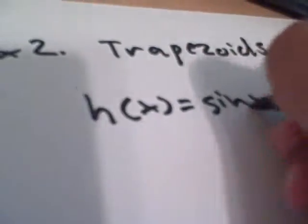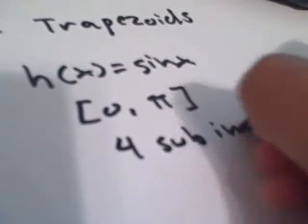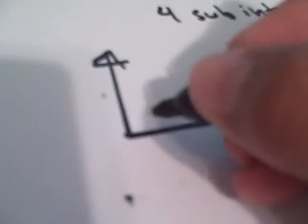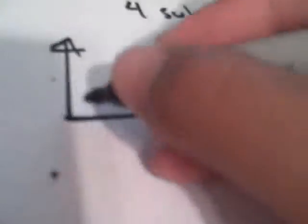For this, I'm going to use a trig example, which is h of x equals sine of x from 0 to pi with four subintervals. I'm going to start off by drawing the graph. Everybody should be familiar with the sine of ideal graph. From 0 to pi, it's just going to be half of it, the first half, the upper half.